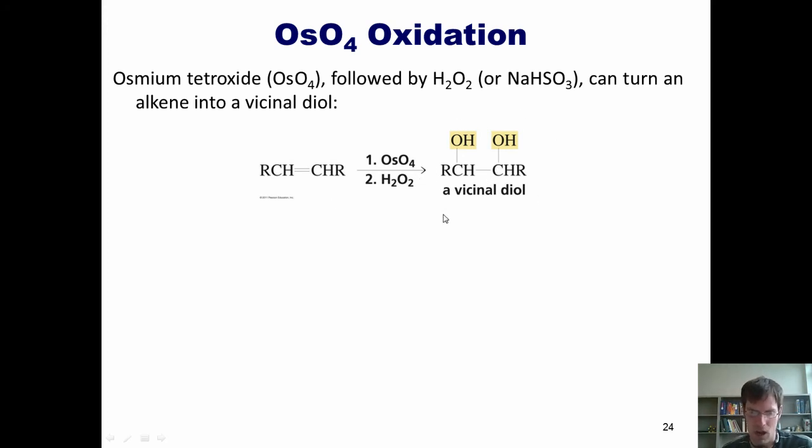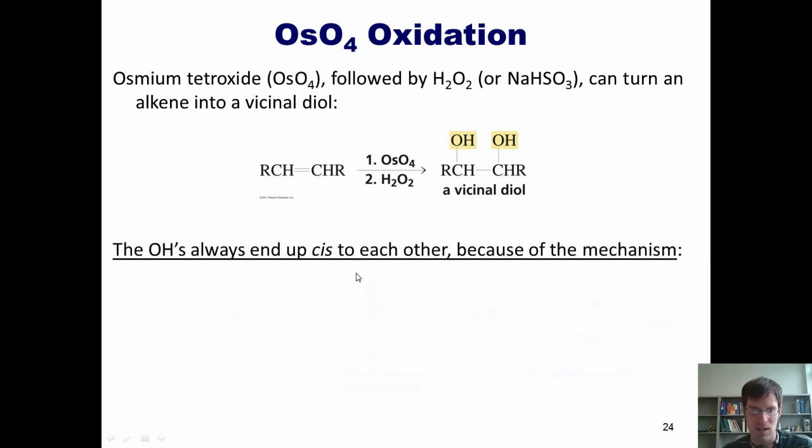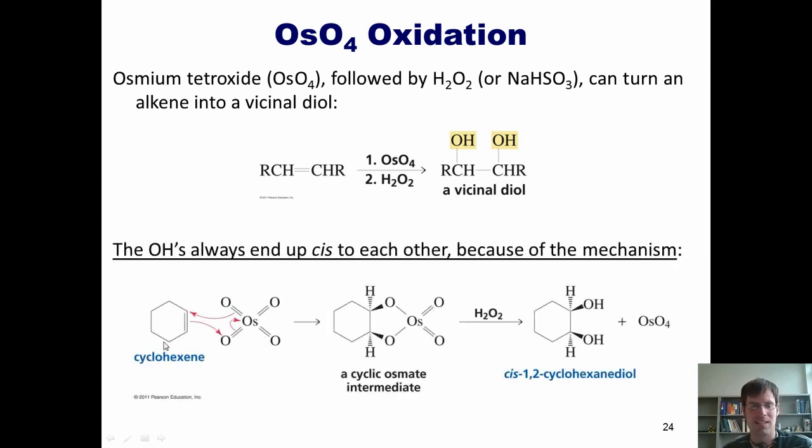Now you should know, however, that the OHs always end up cis to each other because of this mechanism. So if I took like a cyclic alkene, treated it with these exact same conditions, I would end up with the two OHs cis, never trans.